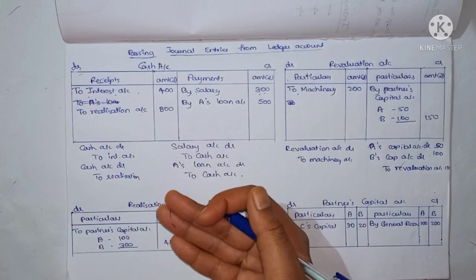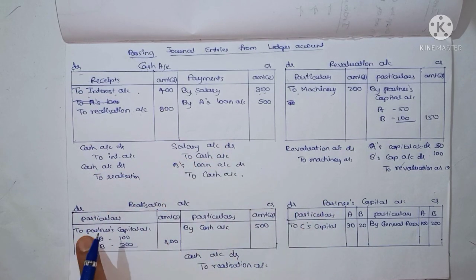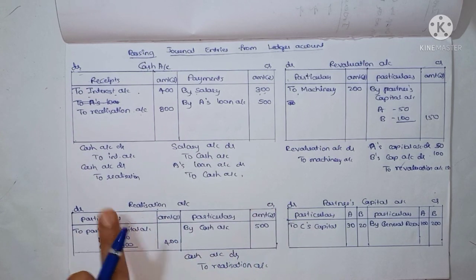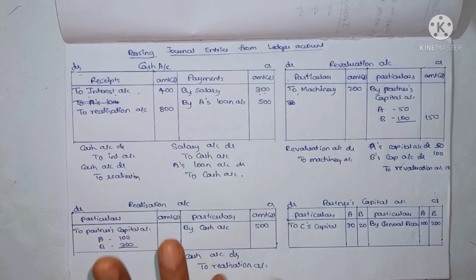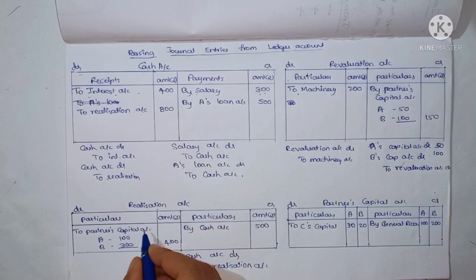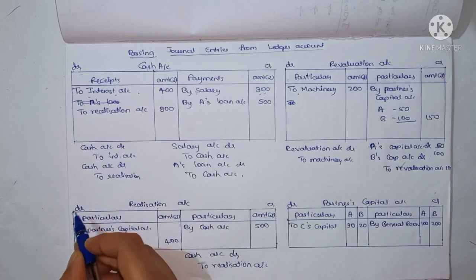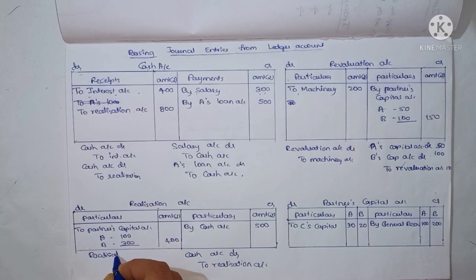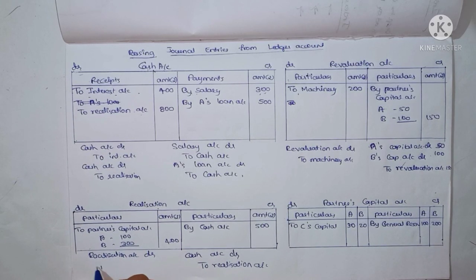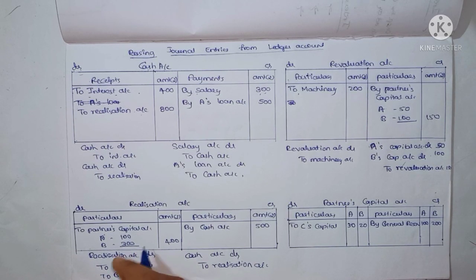Now this is the next question: Realization Account shows a profit. This is a credit balance, so you transfer this amount to the Partners Capital Account. The entry is: Realization Account debit to Partners Capital Account. Get the total shares and distribute to all partners — to A's Capital and to B's Capital.